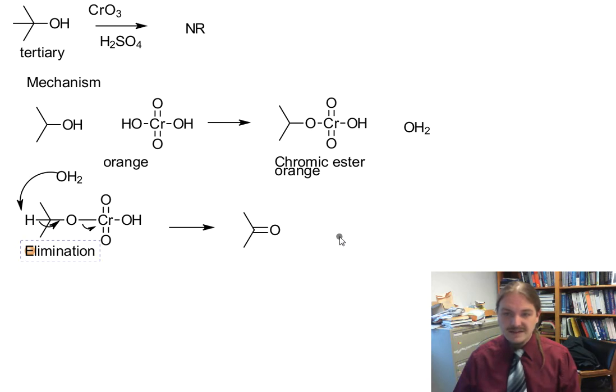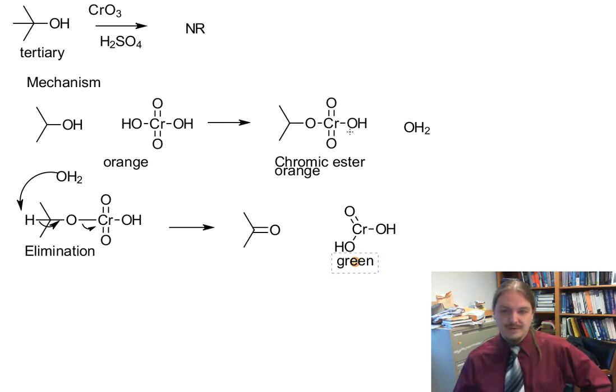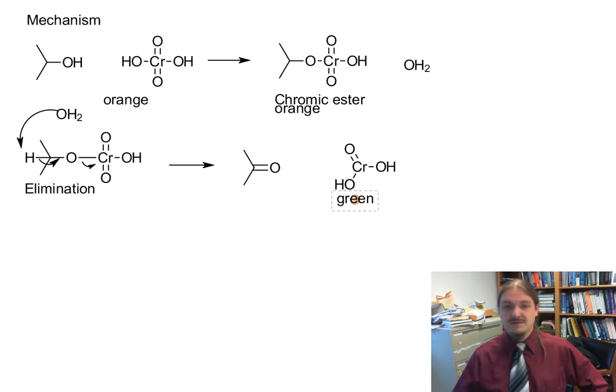And instead of having chromic acid, we now have chromous acid, which looks like this. And chromous acid is green. And so as this reaction progresses, it turns to a brown first, probably because green and orange is brown. So this is the reaction where you'll see a nice color change that gives you an idea that something is going on.